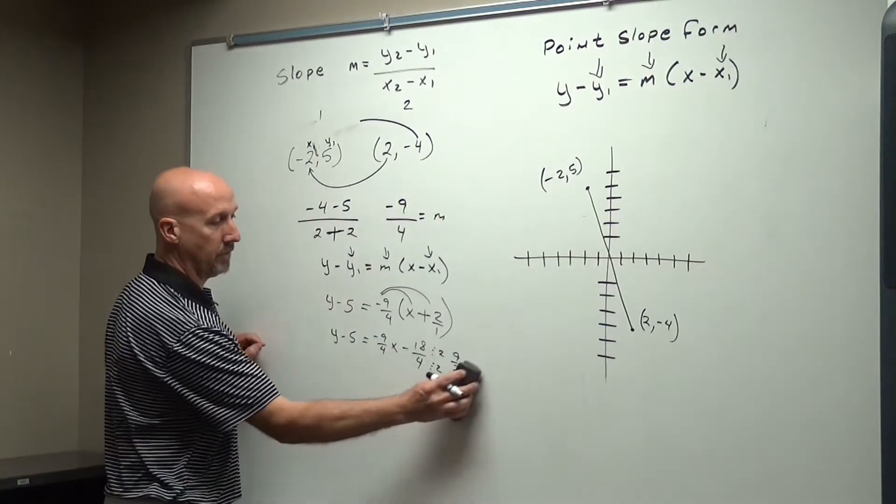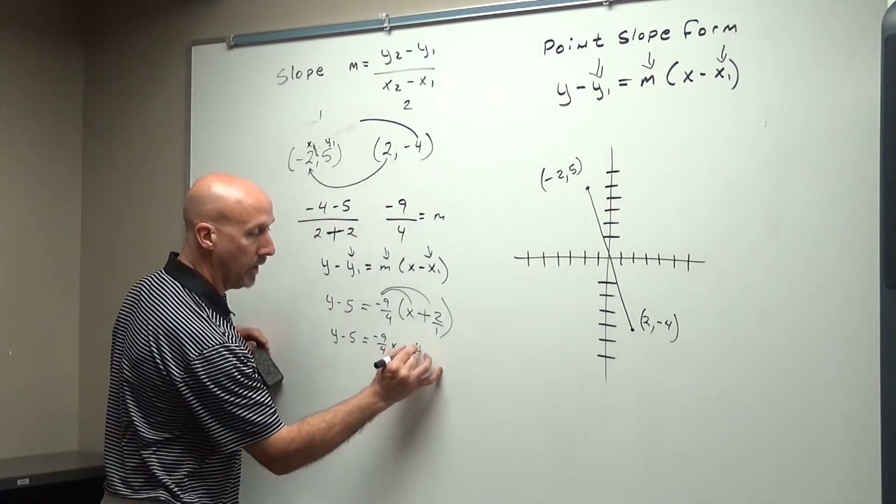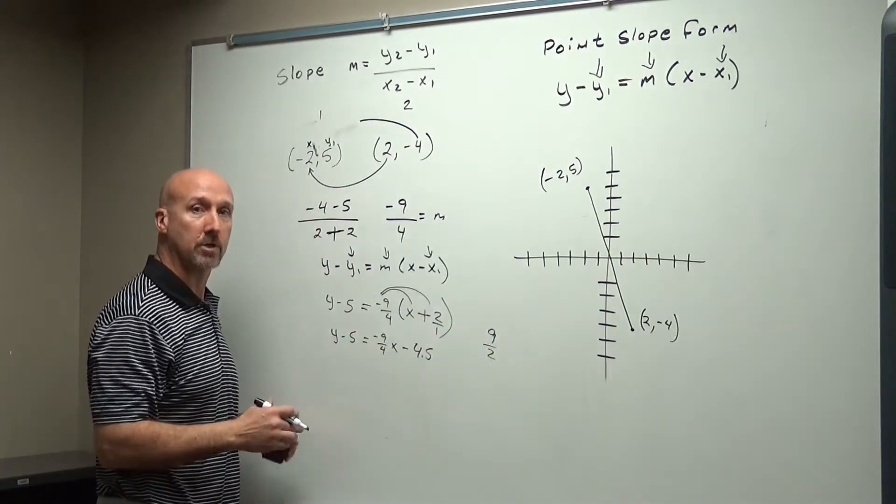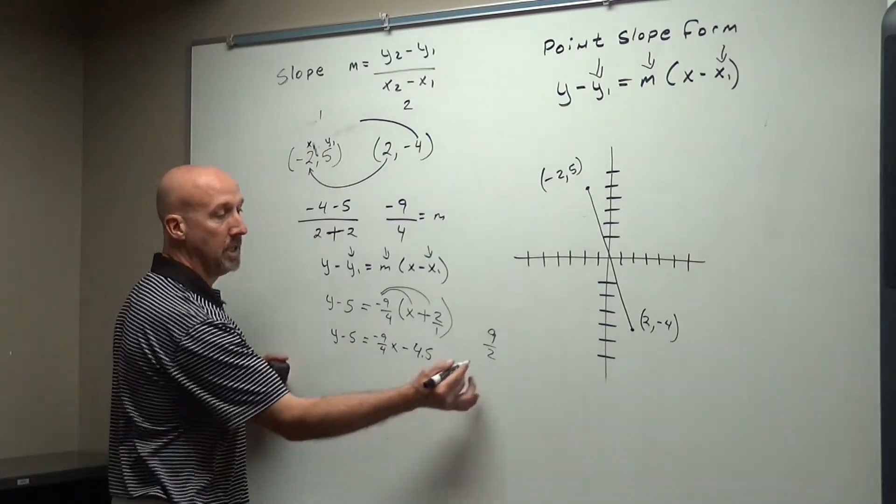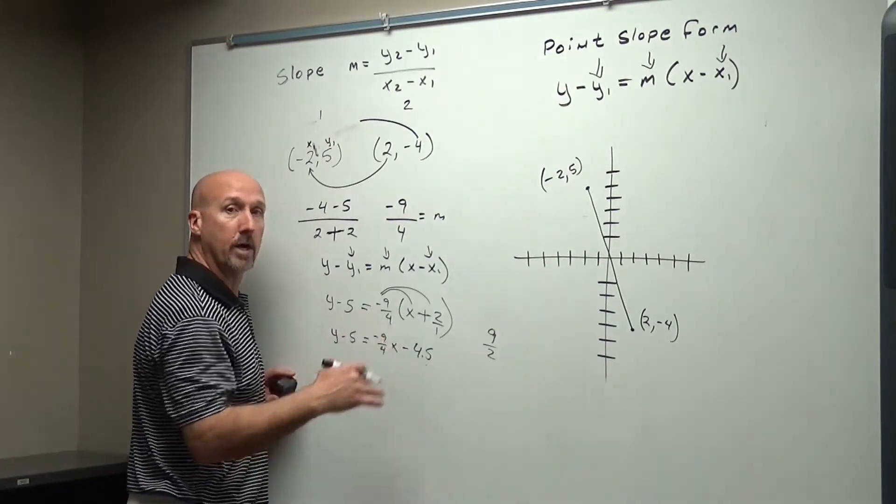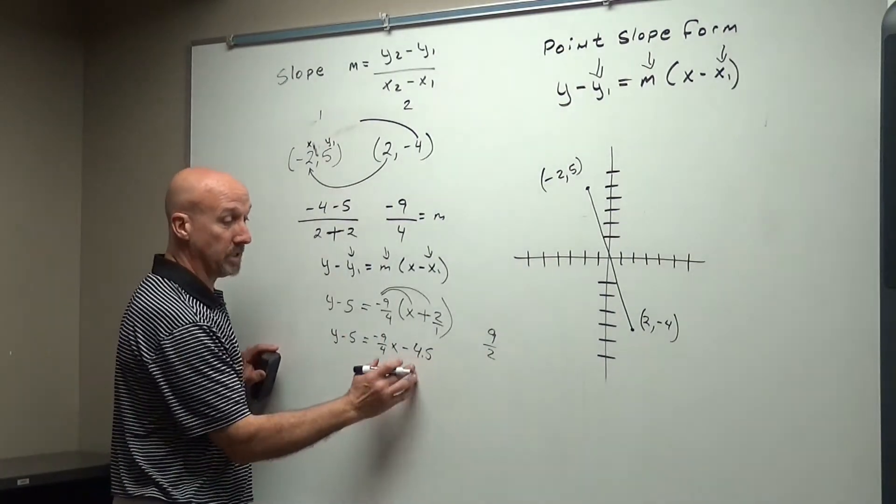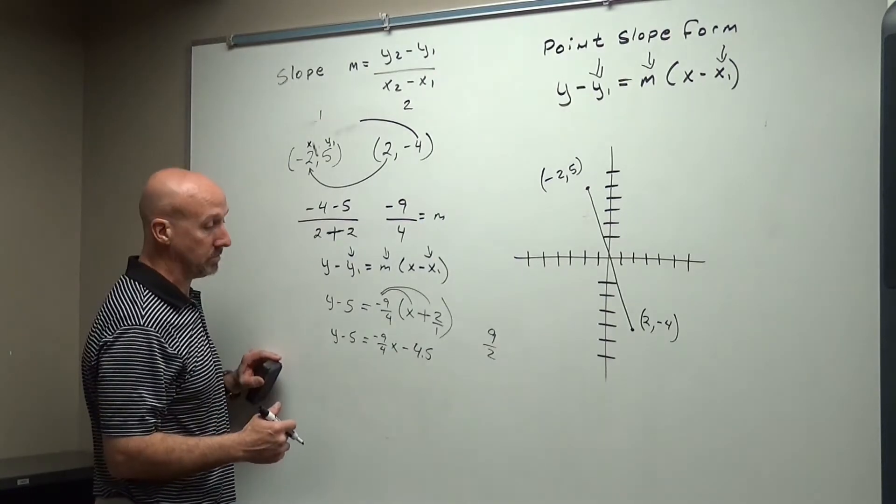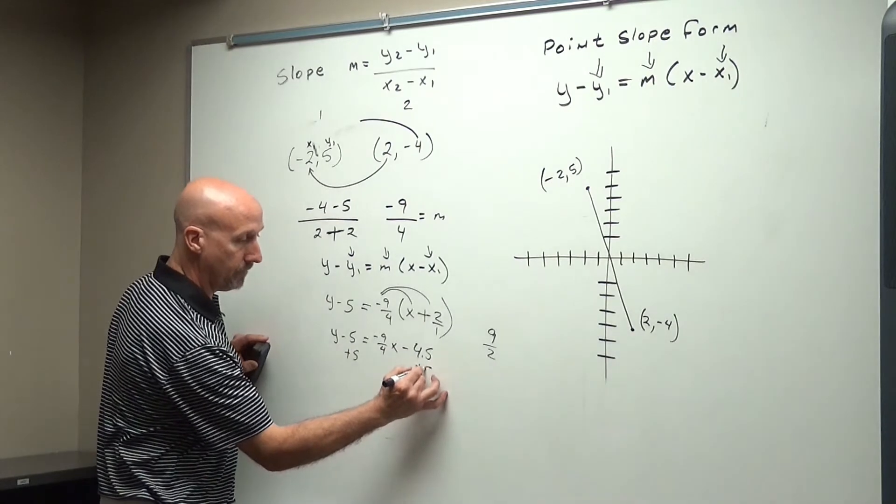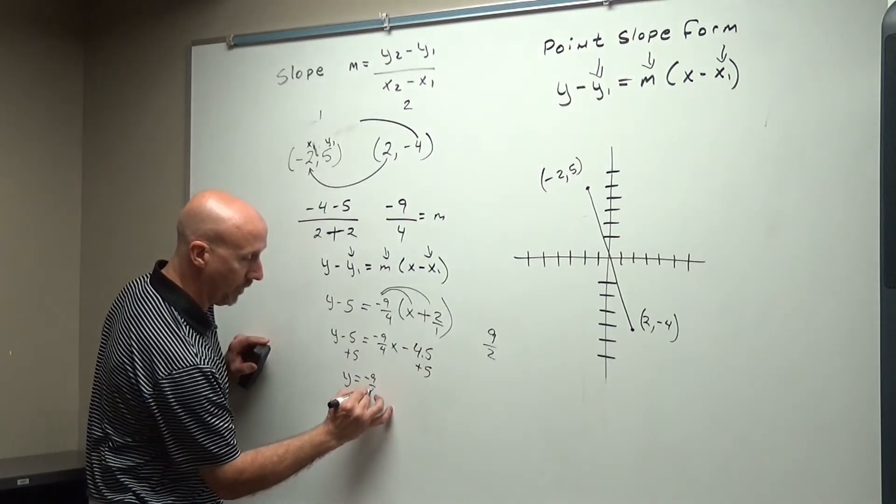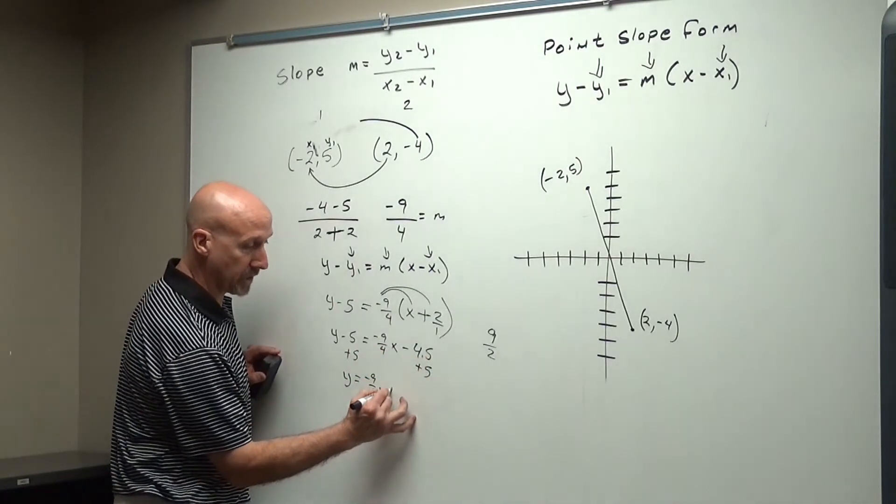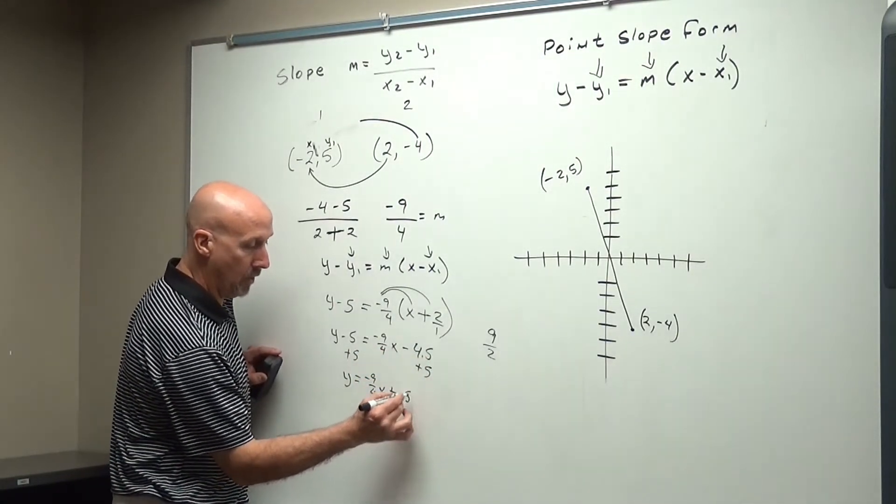So I simplify the 18 over 4 to 9 over 2, or 4.5. Now normally, I want to leave it as a fraction. Almost always we want to leave it as a fraction. But if the fraction reduces to an ending decimal, we can go ahead and use that ending decimal. And this one is going to be easy for us, because a .5 is pretty easy to use. So from here, I'm going to add 5. I've got y equals negative 9 over 4x. Negative 4.5 plus 5 is actually just positive .5 or 1 half.